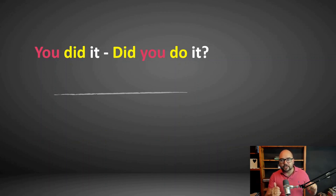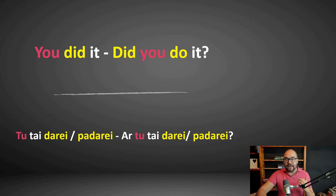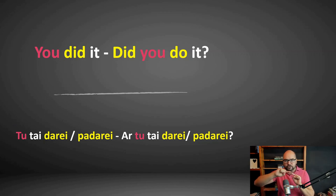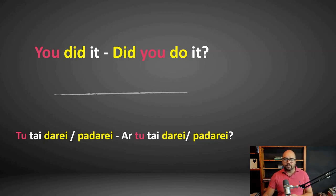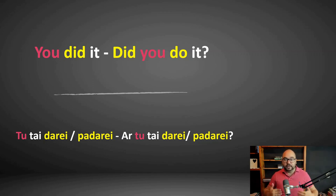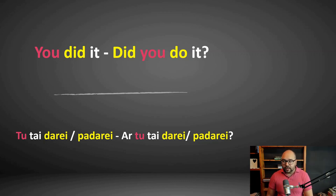Let's now go into the past tense. You did it — and let's make it into a question: did you do it? 'Tu tai darė' — you were doing it (more like past continuous). But 'you did it,' implying something was completed, would be 'tu tai padarė.' Now if I want to make it into a question, I just add 'ar': 'ar tu tai padarė?' — did you do it? 'Ar tu tai darė?' — were you doing it? I'm only adding 'ar' in front.